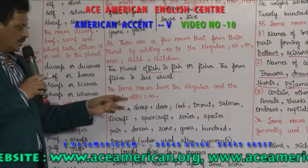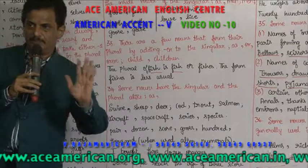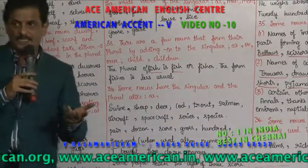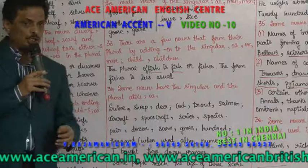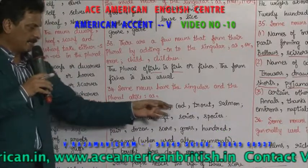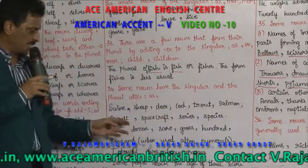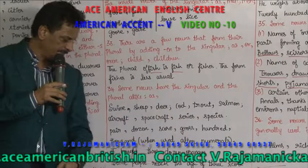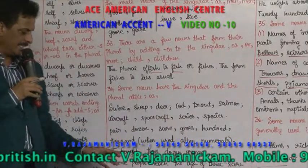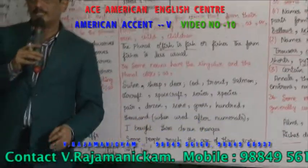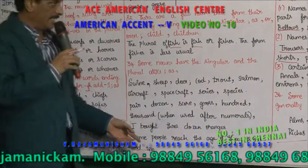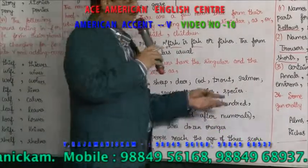Some nouns have the same singular and plural form. Swine cannot be said as swines. Sheep cannot be said as sheeps. Deer, cod, trout, salmon, aircraft, spacecraft, species — pair, dozen, score, gross, hundred, thousand when used after numerals.